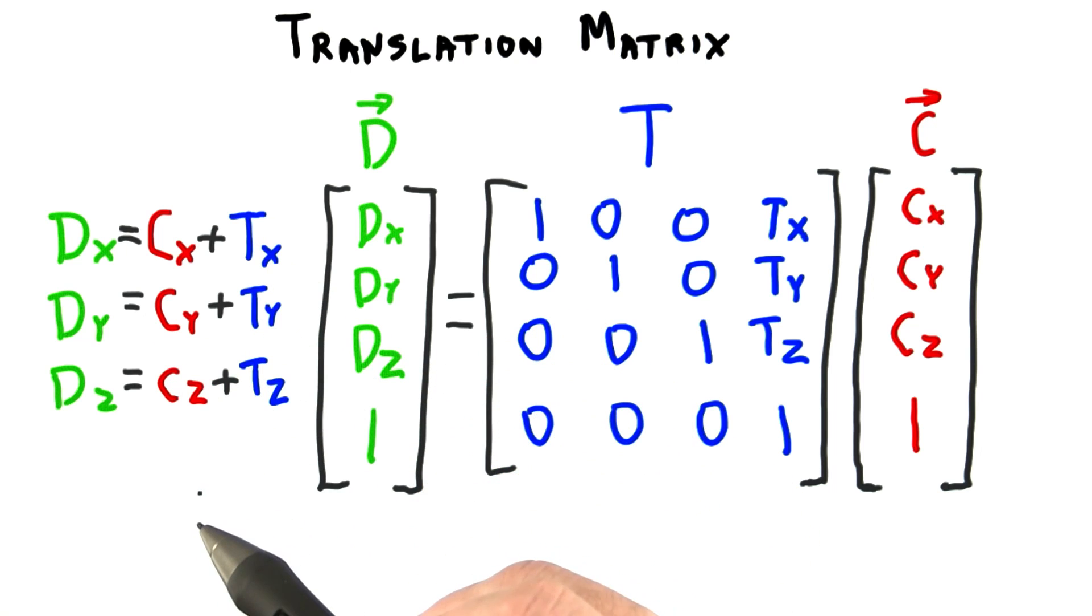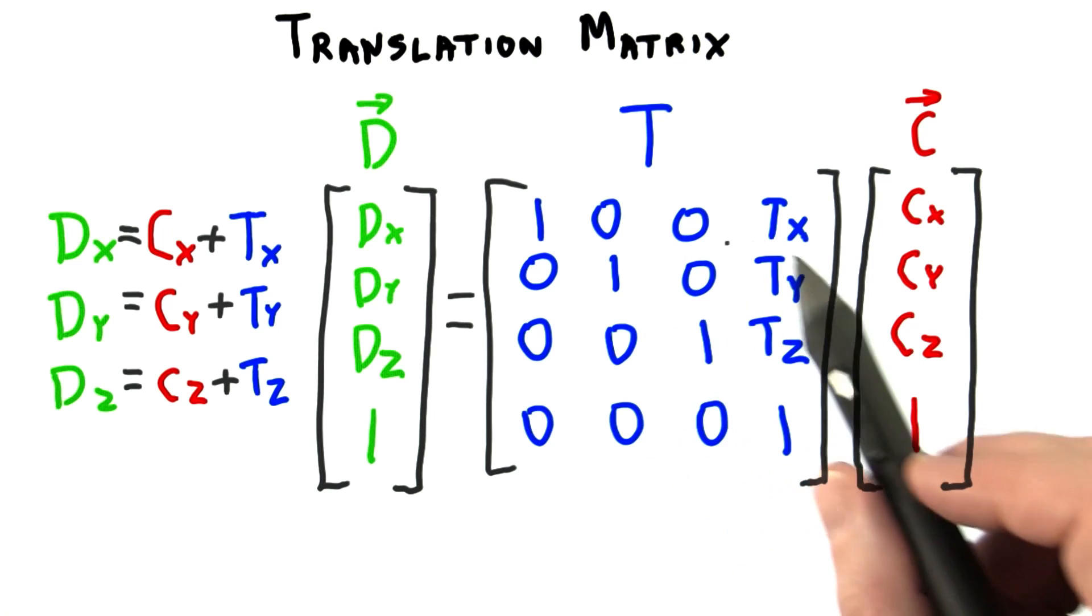This may seem like a convoluted way to add a vector to a point, but you'll soon see that many other transforms can be combined and stored in this matrix, translations among them. With a single matrix multiply, you can then perform any number of transformations.